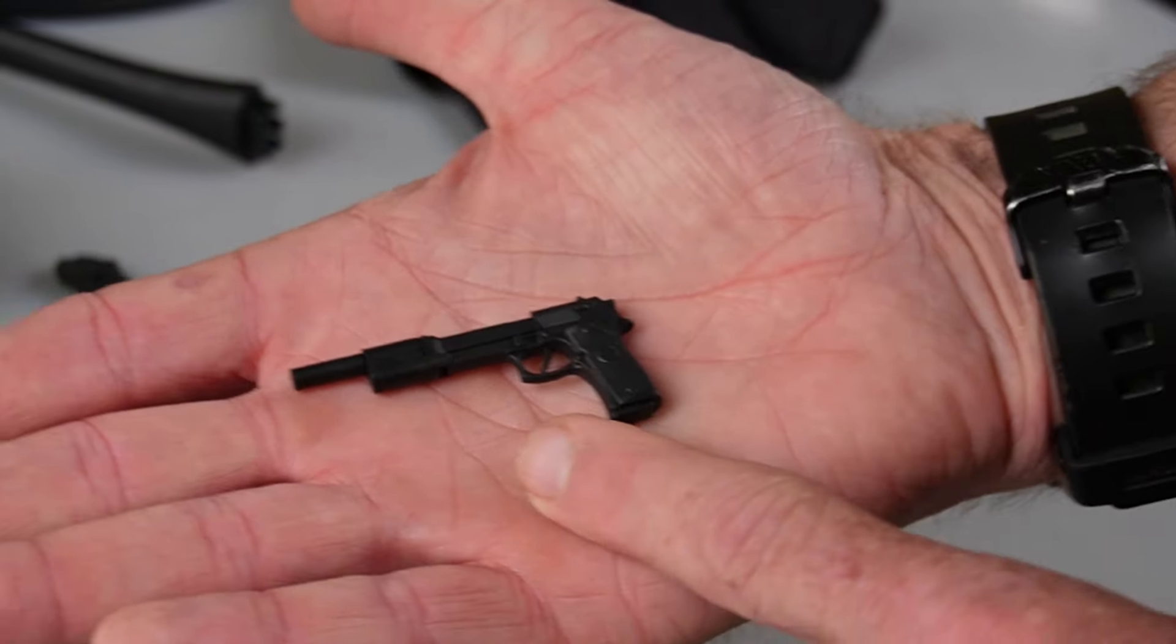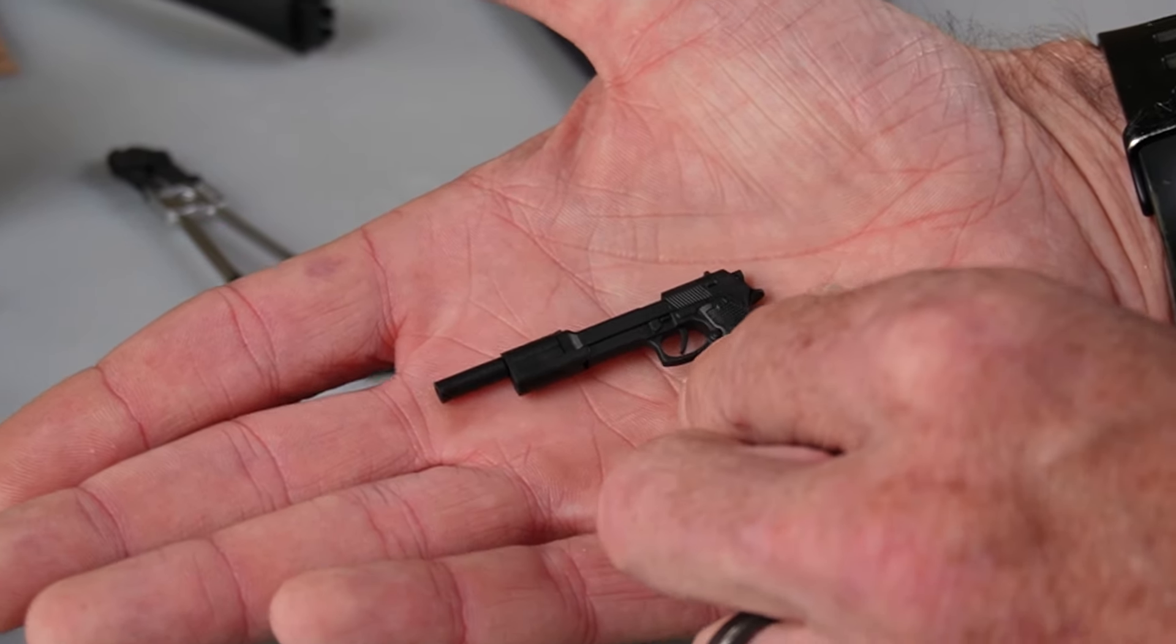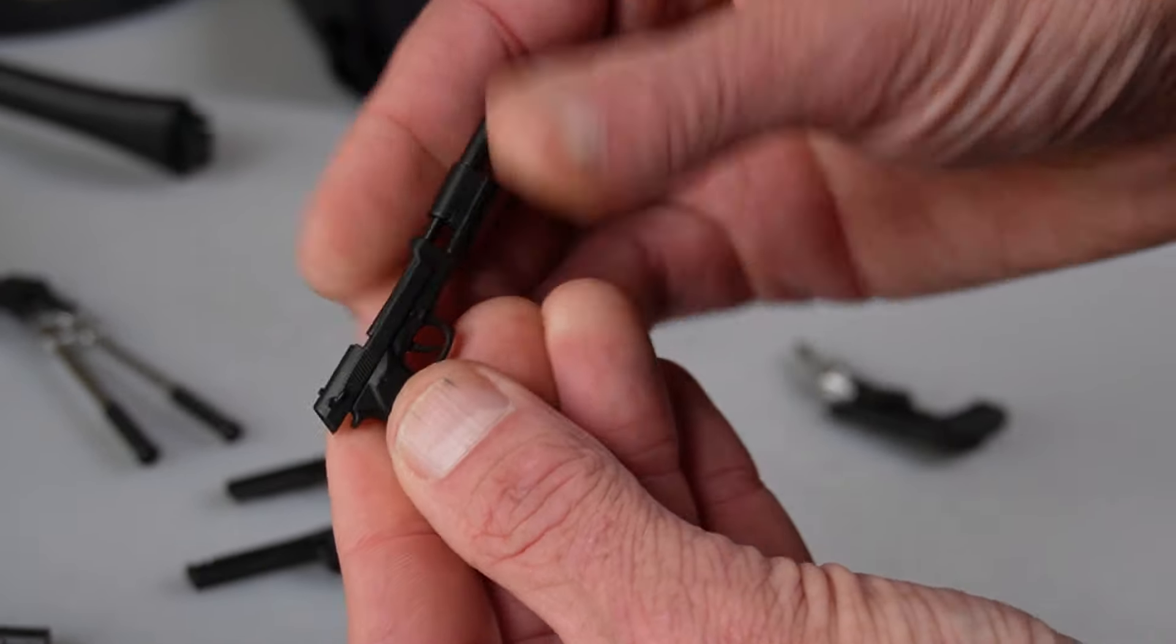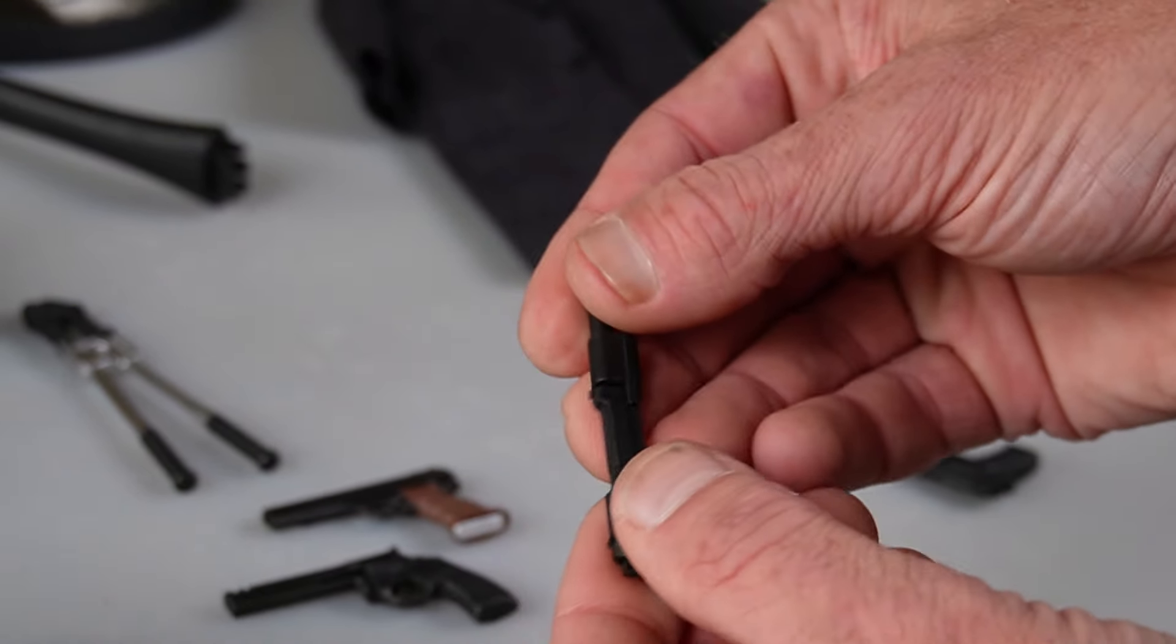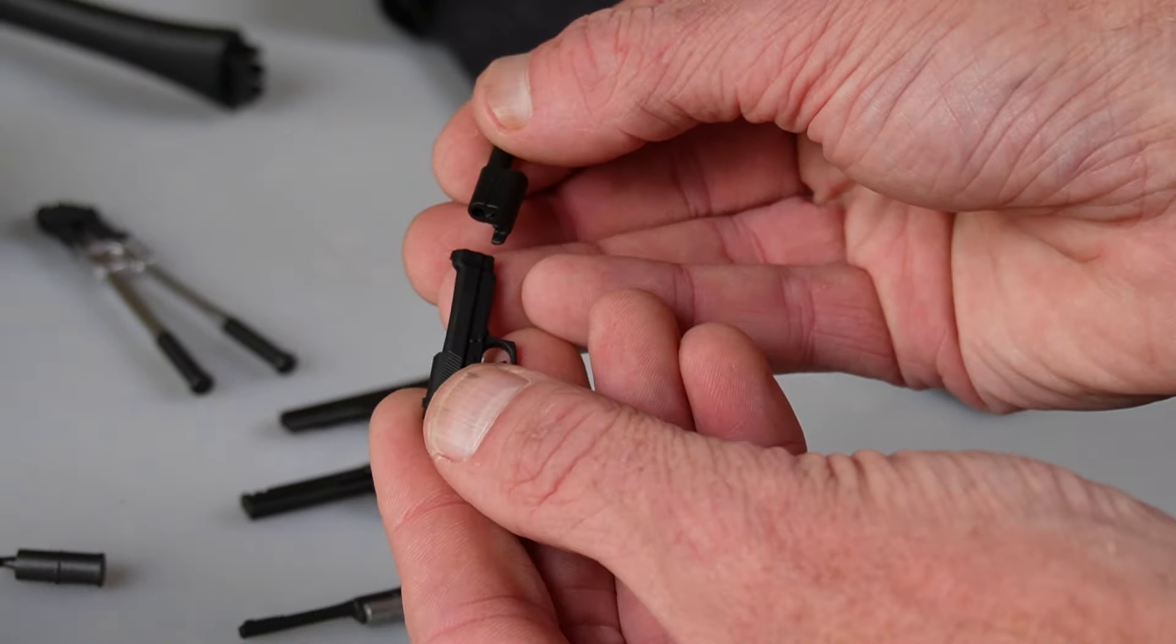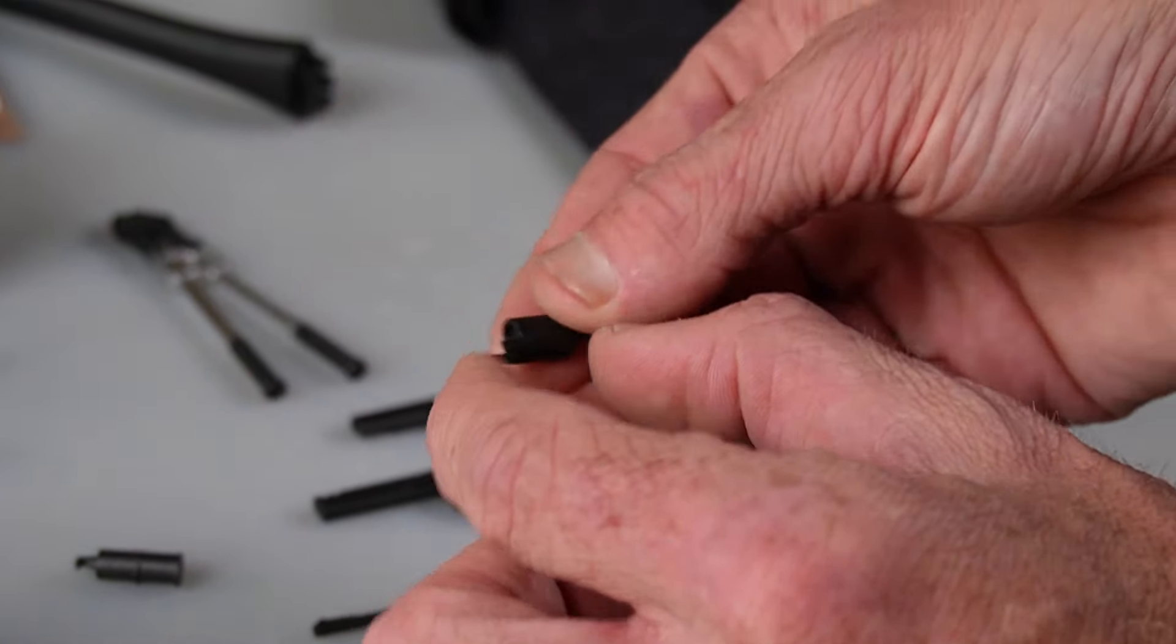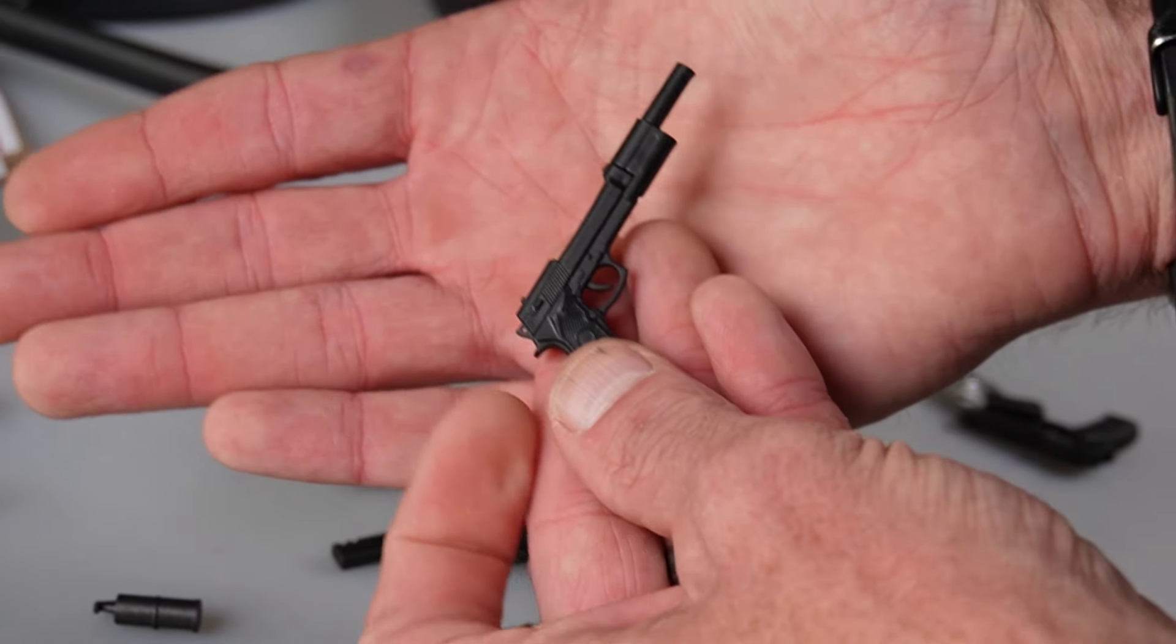This is a Beretta 92. It's got a different front end. Magazine does come out on that guy. You can pop that off. So if you had a really good quality like Soldier Story Beretta, you could pop that off and put it on there. Super cool.